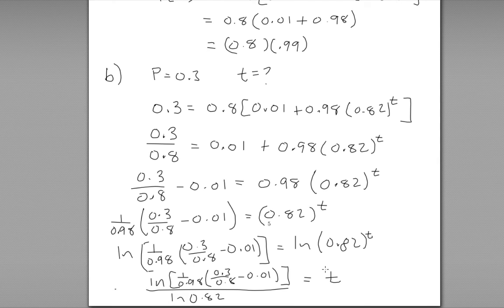Of course, you could put this into your calculator to get a numerical value for t, but this expression is a fully accurate result — it represents the number of seconds that must pass before the probability of recall drops to 0.3.